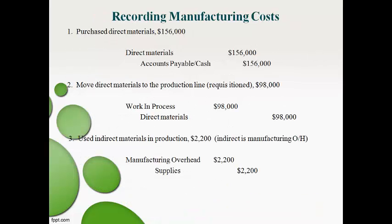The first transaction — materials purchased — is recorded by the financial accountant just like any other asset purchased. Direct materials are moved to the production line and recorded as work in process. The third transaction records the use of supplies. Supplies are indirect materials and are part of manufacturing overhead. We will combine the financial and managerial accountant's journal entries into one, recorded directly to the manufacturing overhead temporary account.